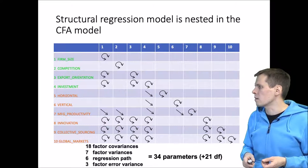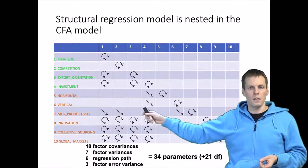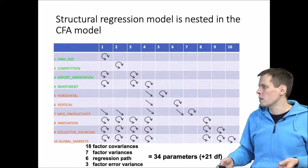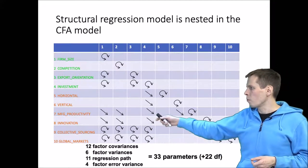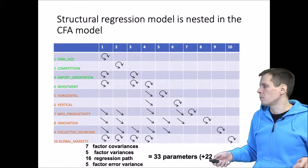Manufacturing productivity has a few more paths, but there are some missing paths here and that gives us more degrees of freedom. Innovation—same thing, not all paths are present, so degrees of freedom goes up.